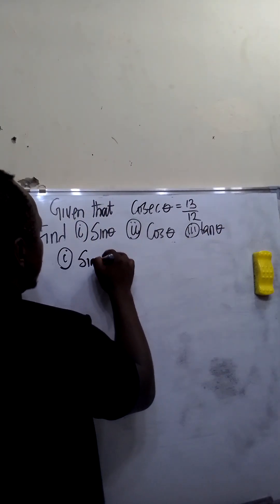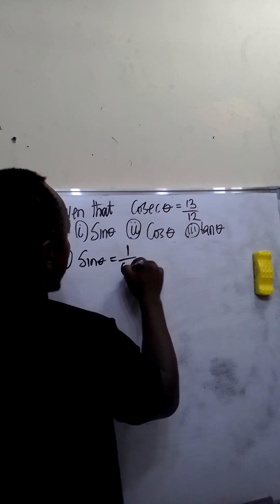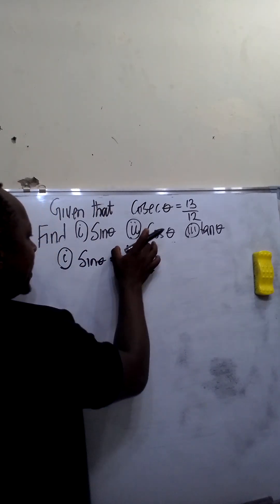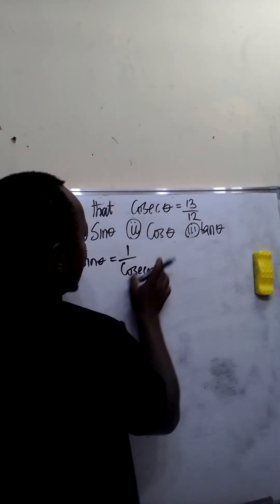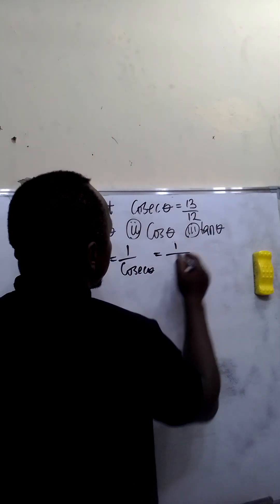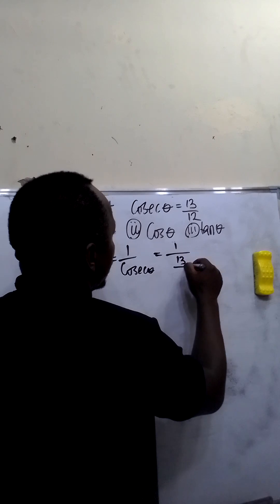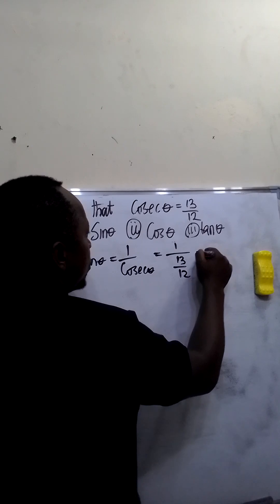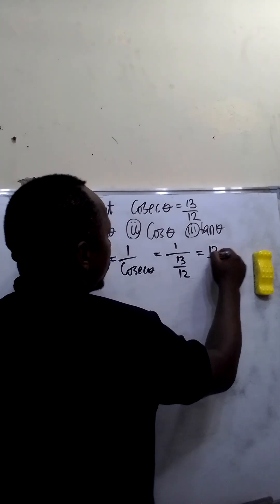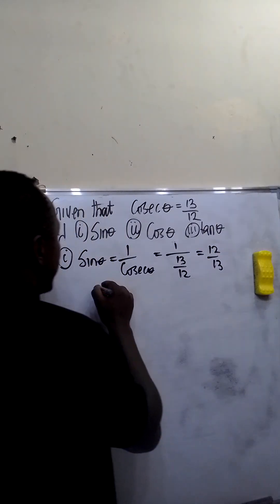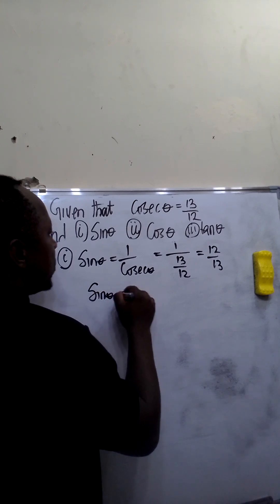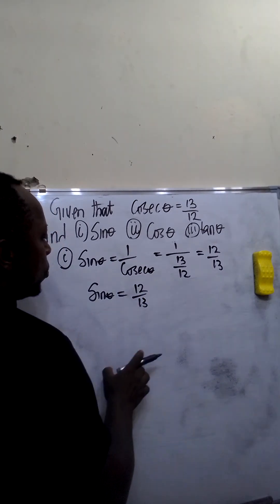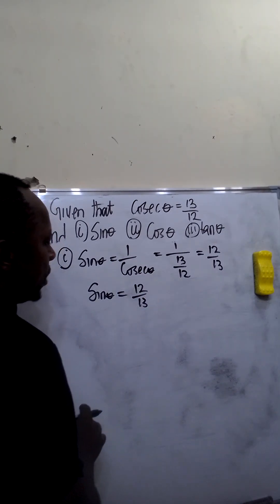Sin theta is equal to 1 over cosec theta, because sin theta is the inverse of cosec theta. This is equal to 1 over 13/12, which is the same as 12 over 13. So sin theta is equal to 12 over 13. We can represent this ratio on a right-angle triangle.